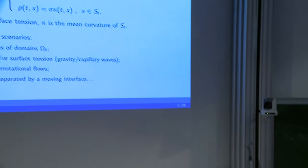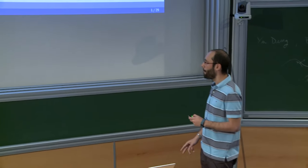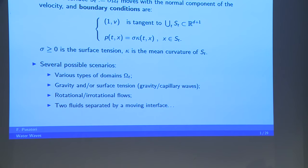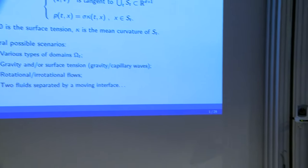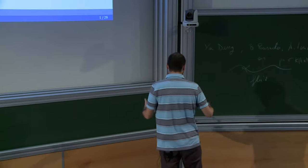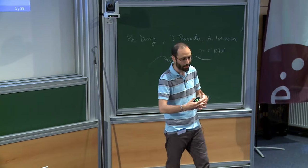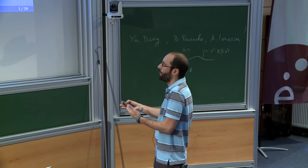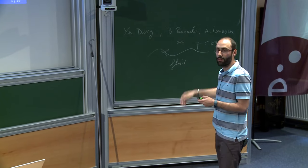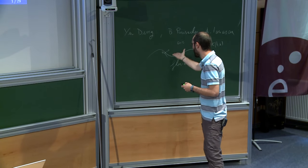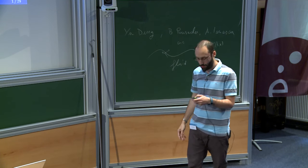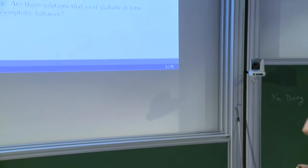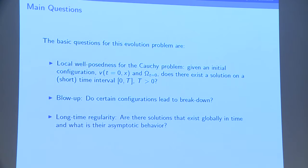In addition, you might or might not want to assume the fluid has curl zero — in which case we call it irrotational — or curl not zero. You can also consider more general models where you have two fluids, which creates all sorts of possible scenarios: a lighter fluid above a heavier one, fluids that shear, and so on. If you have two fluids, you just have the same set of equations on the other side, with some condition that the boundary moves consistently with both.